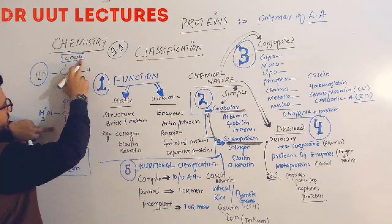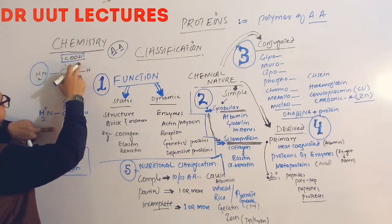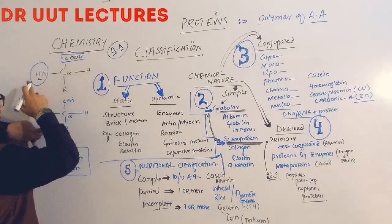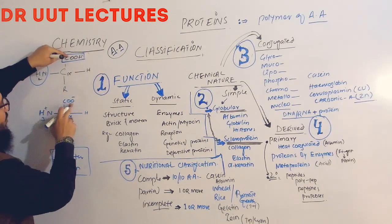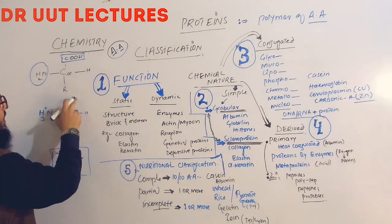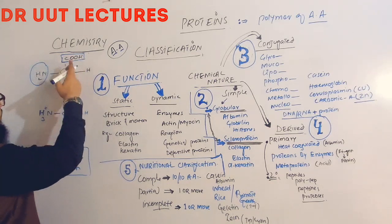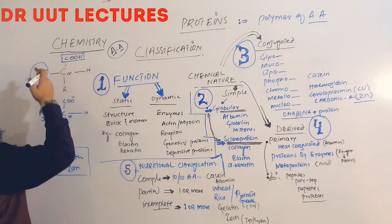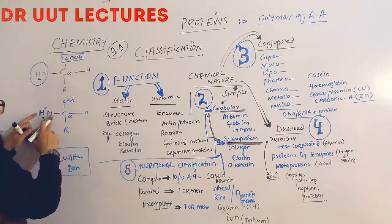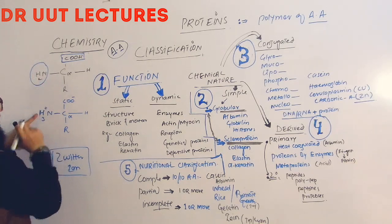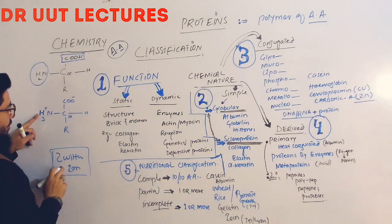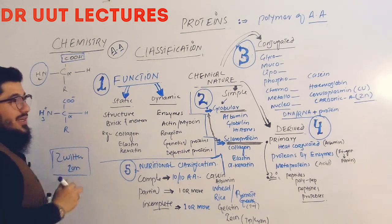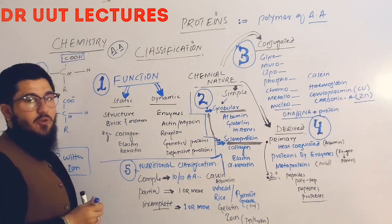When the proton shifts from the carboxylic acid toward the amino group, the carboxylic acid becomes COO⁻ (negatively charged) and the NH₂ is converted into NH₃⁺ (positively charged). This ionic structure is known as zwitterion, and this is the actual form in which amino acids exist.